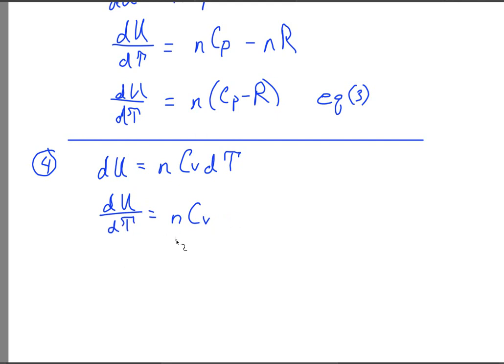it's perfectly okay to make this substitution. And so we can say that nCv is going to be equal to n times Cp minus R.